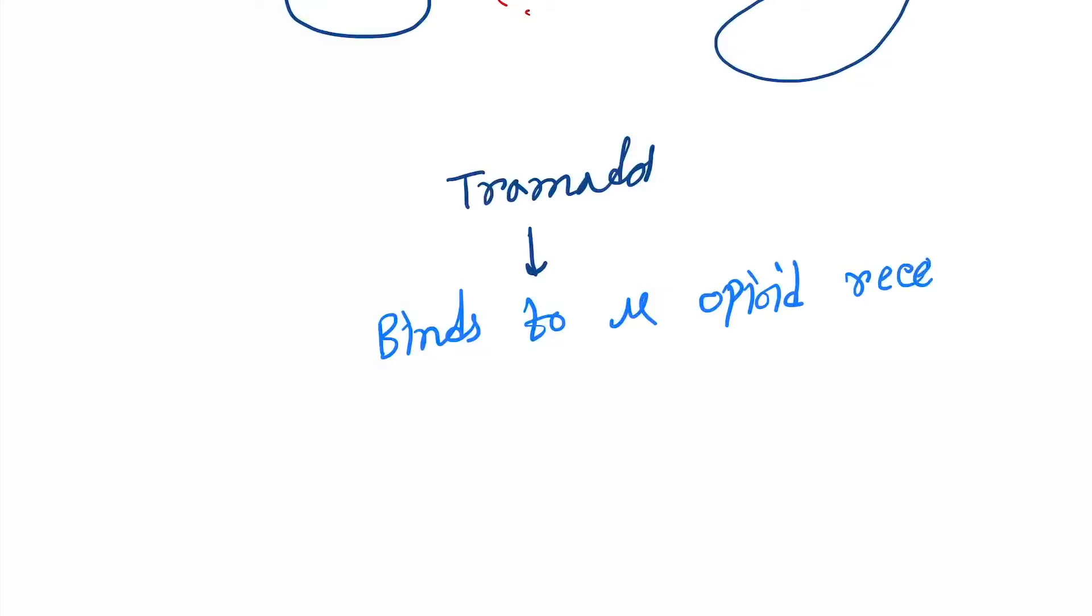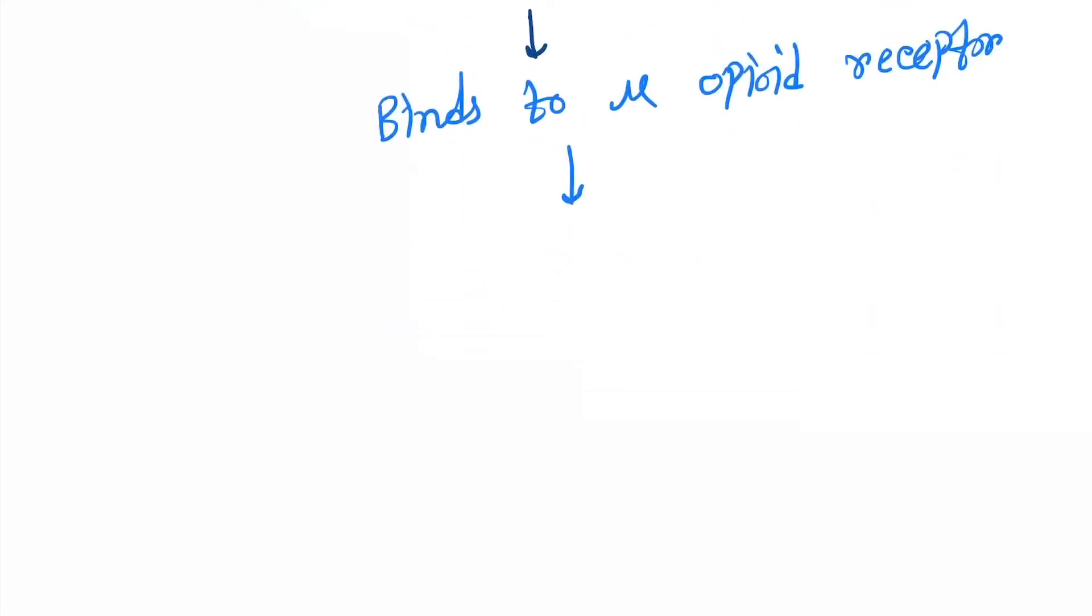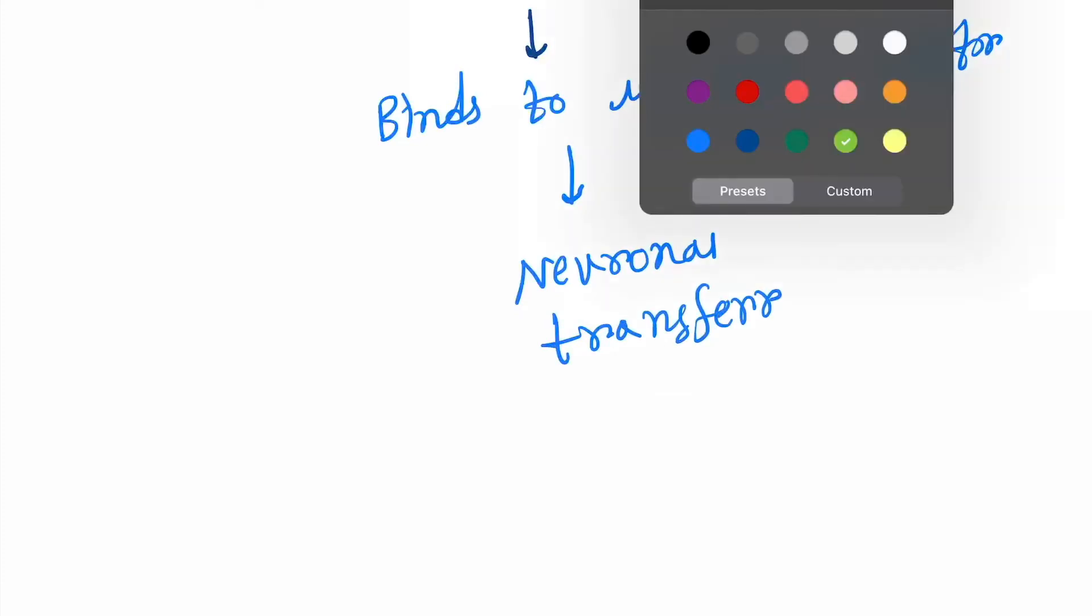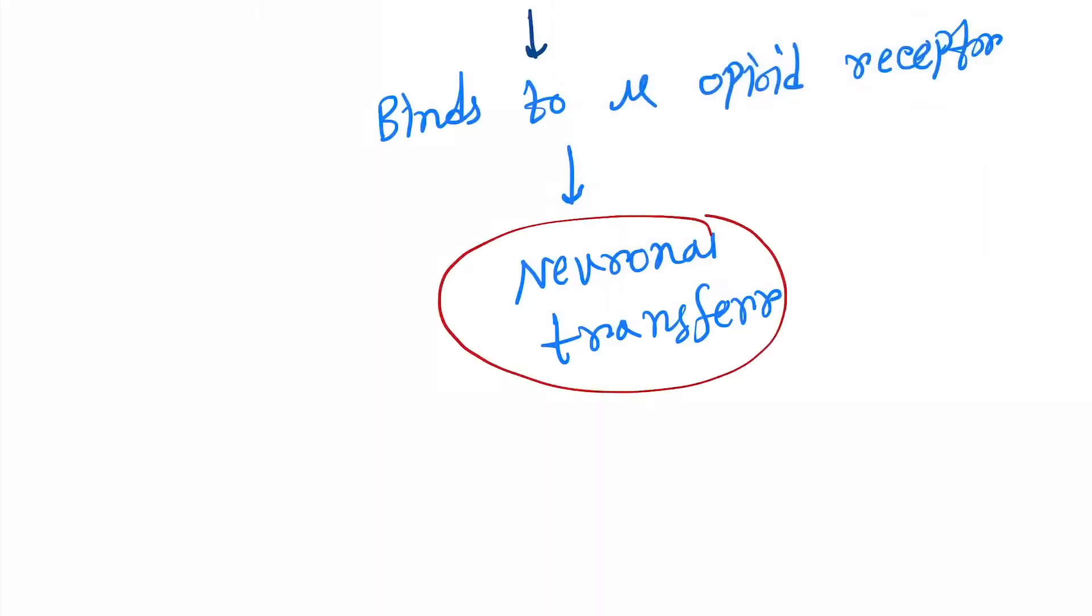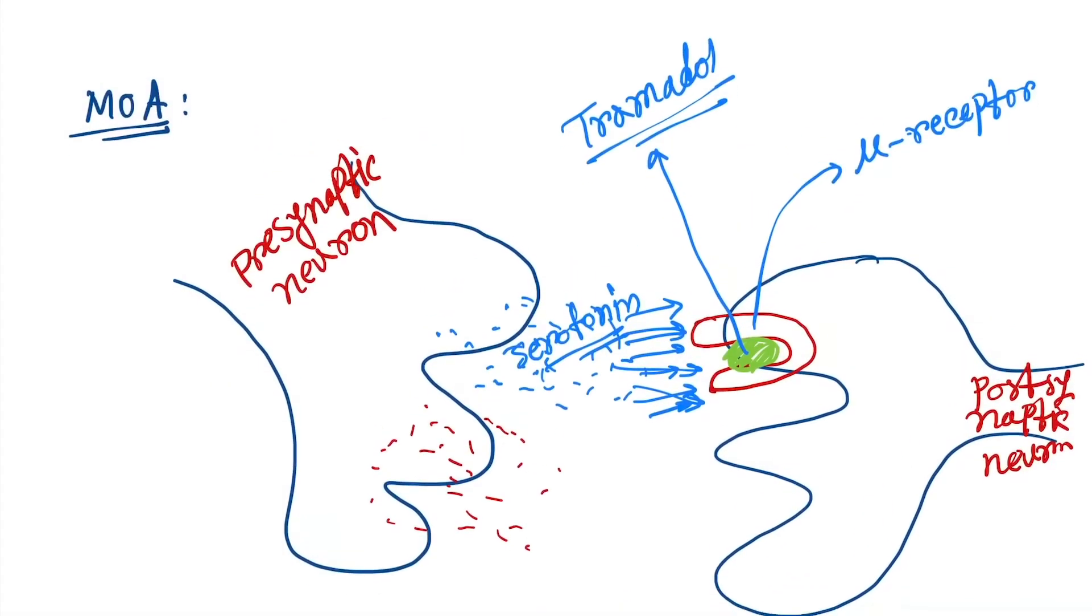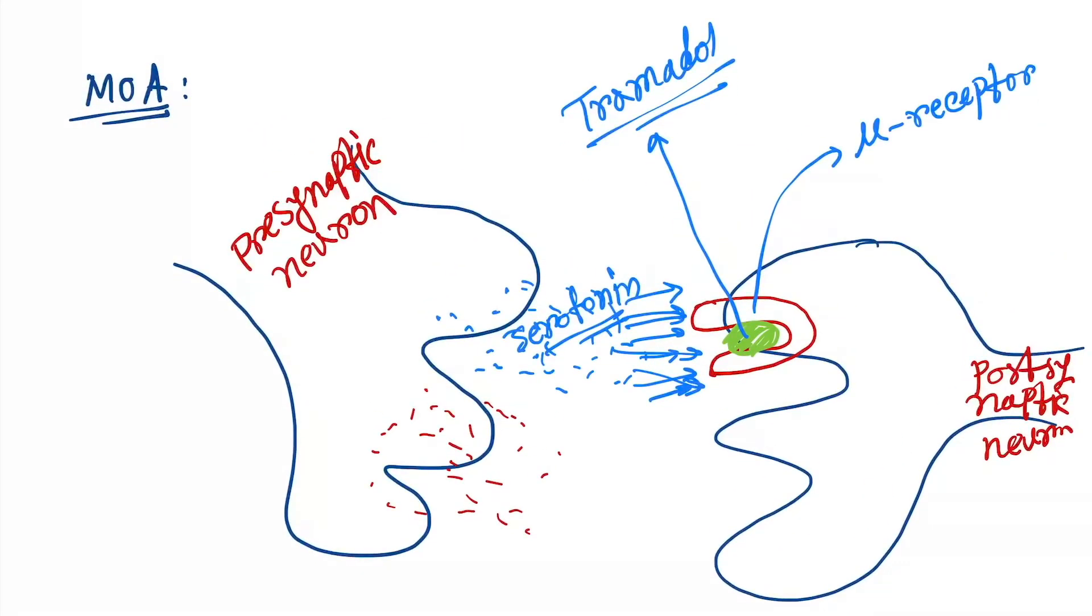Next, the neuronal transfer gets inhibited. As a result, no pain transmission occurs. This is the mechanism of action. I hope you have understood. Now let's learn the uses.